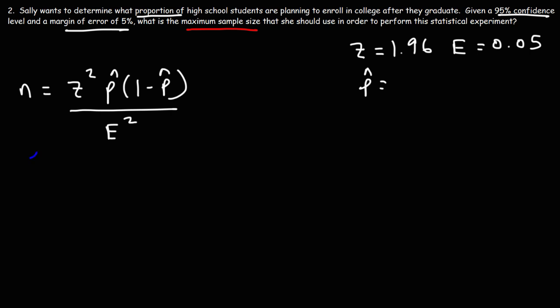Now keep in mind she wants to calculate the maximum n value. So what is the best sample proportion that she should use such that p̂ times 1 minus p̂ will give her the greatest value?